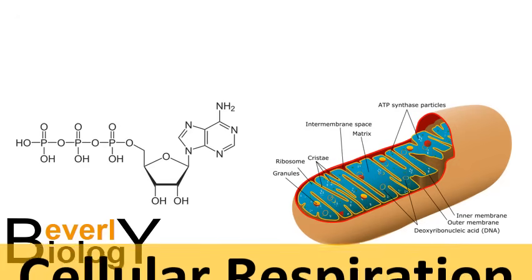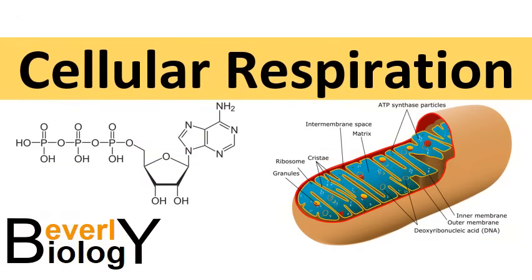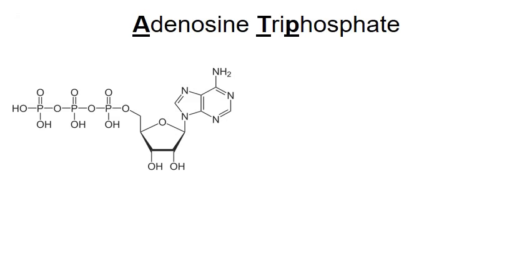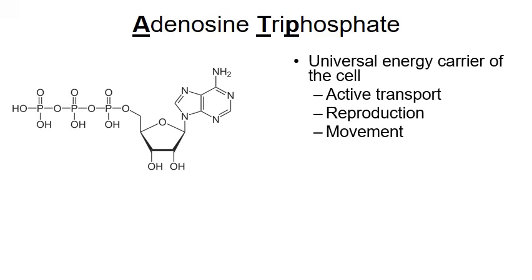The topic of this video is cellular respiration. This molecule, adenosine triphosphate, is why the cell performs cellular respiration. It's trying to make ATP because ATP is the energy molecule used by the cell.